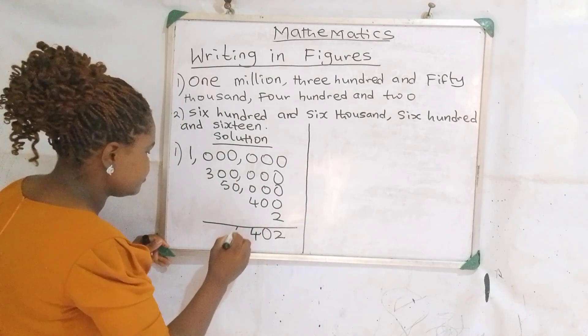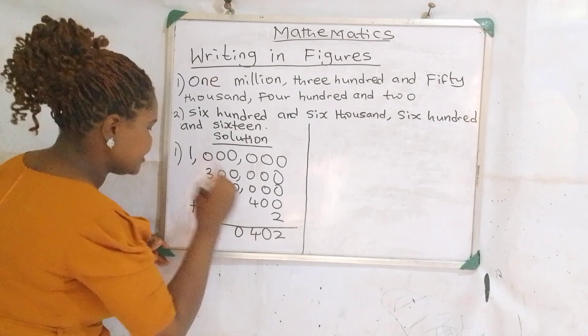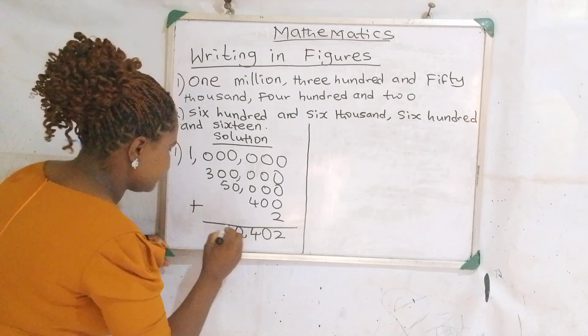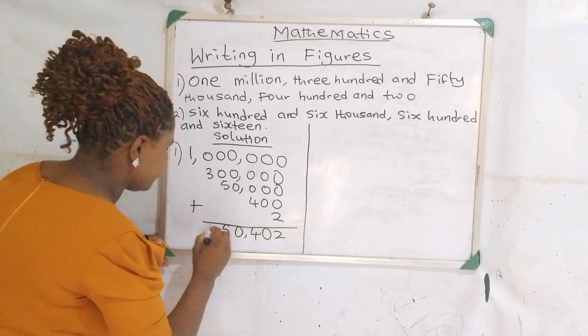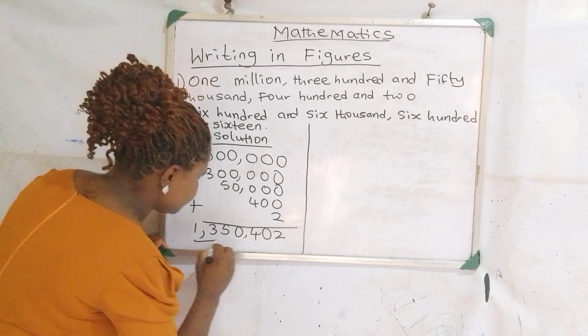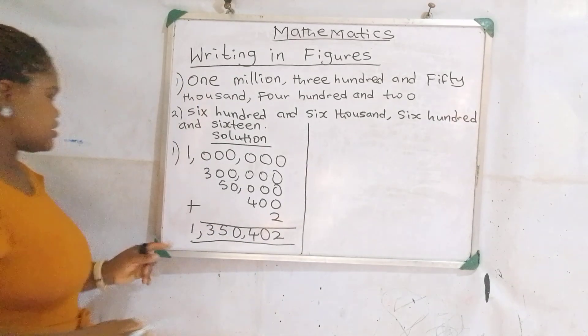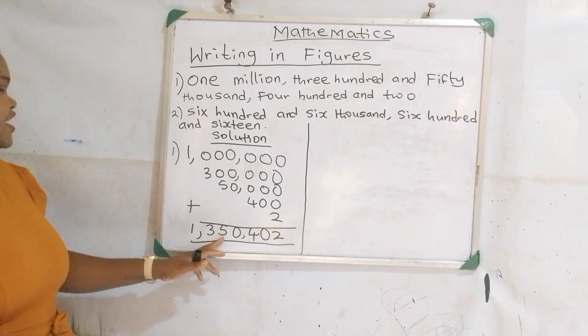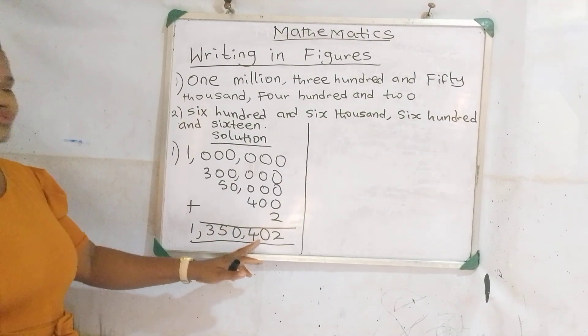You bring down your 0. Remember, we are adding. You bring down your 5. You bring down your 3. And you bring down your 1. This is how you write your words: 1,350,402.